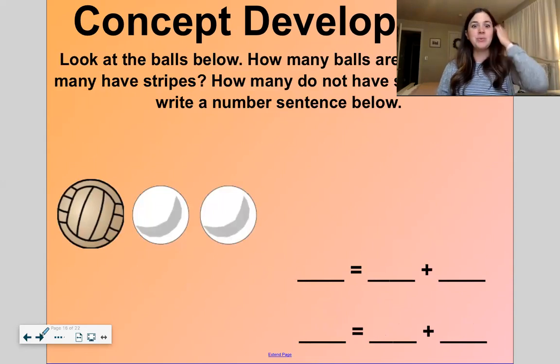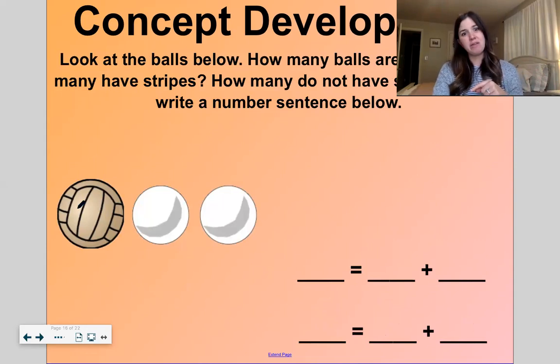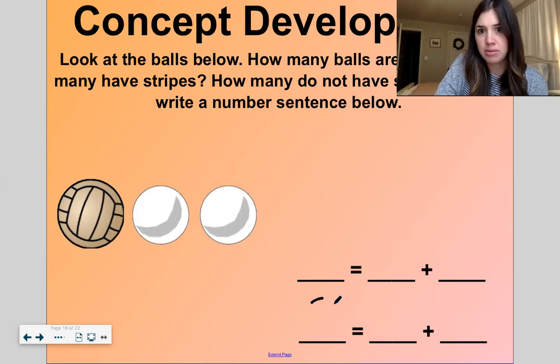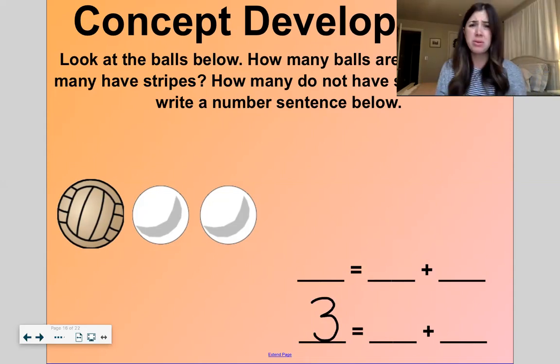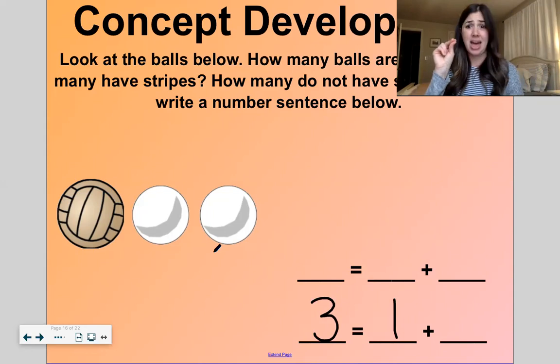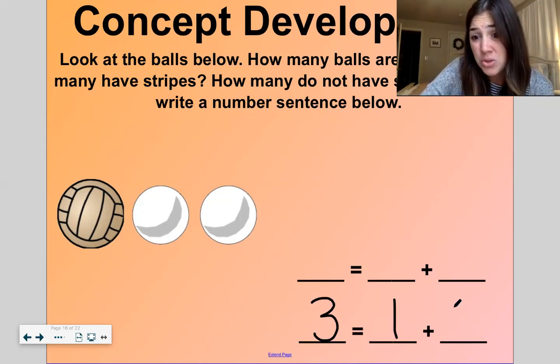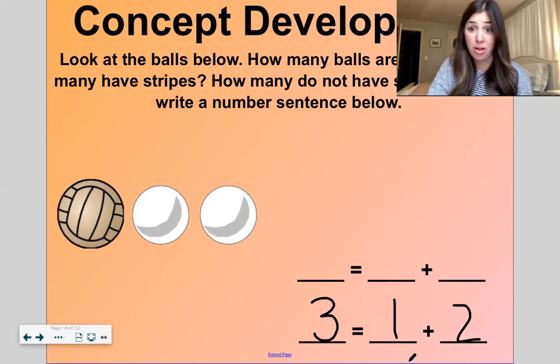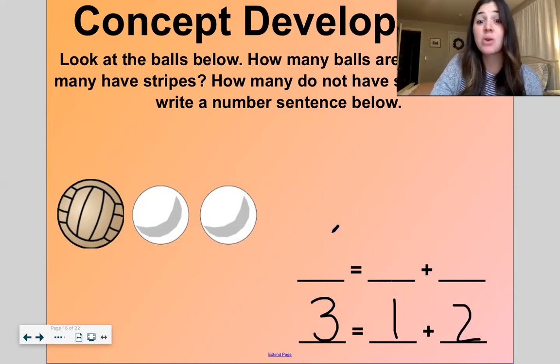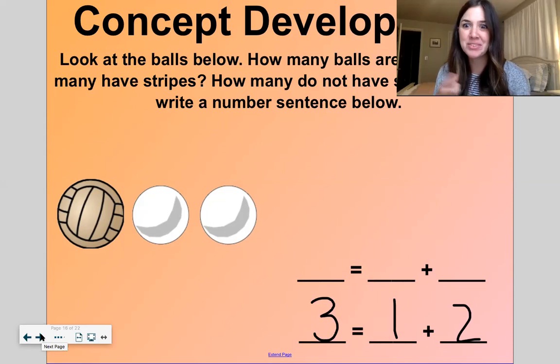Okay. Now let's look at these balls. Oh, it looks like maybe those are golf balls and volleyballs. This looks like a volleyball. These look like golf balls to me. Okay. How many balls are there total? One, two, three. Okay. So I'm gonna write a three right here. How many balls have stripes? I'm gonna say these things are like stripes. So how many balls have stripes? One. So I'm gonna write a one right here. How many balls do not have stripes? Two. So that would be our number sentence. Three equals one and two. One ball with stripes, two balls without stripes equals three total balls. That is our number sentence. Those are our hidden partners of three. One and two.